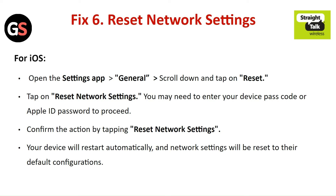Fix 6: Reset the network settings. For iOS, open the Settings app, go to General, scroll down and tap on Reset. Tap on Reset Network Settings. You may need to enter your device's passcode or Apple ID password to proceed. Confirm the action by tapping Reset Network Settings. Your device will restart automatically and the network settings will be reset to their default configurations.